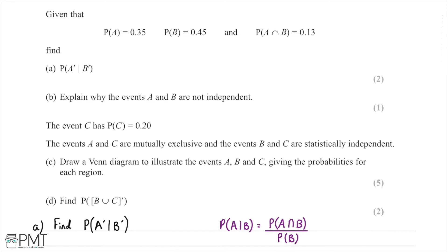In this question we're given three probabilities. The probability of A is equal to 0.35, the probability of B is equal to 0.45, and the probability of A intersect B is equal to 0.13.